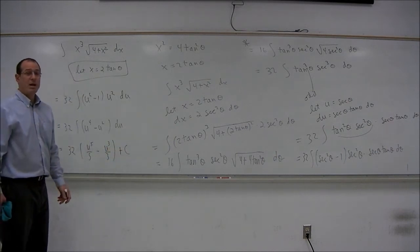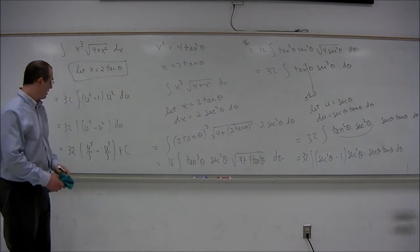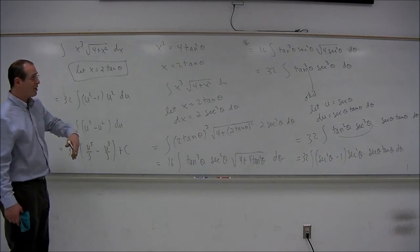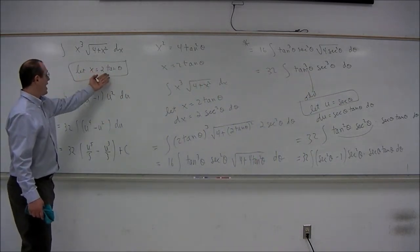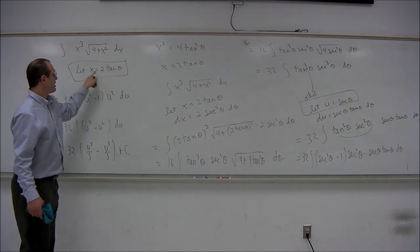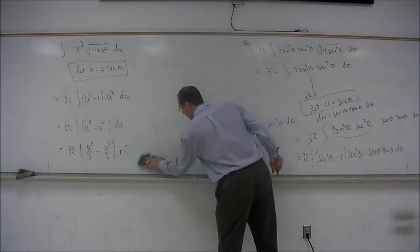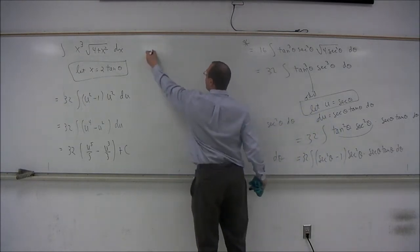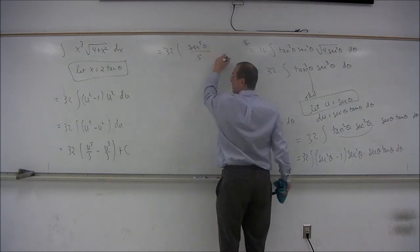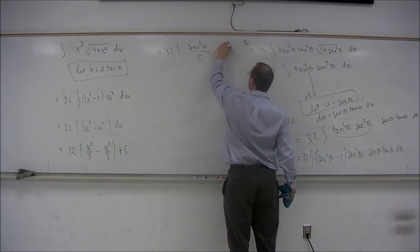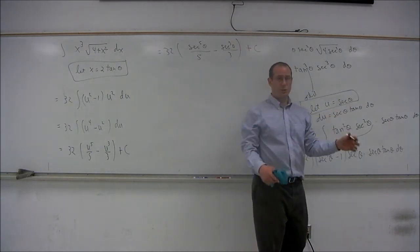So that's essentially our answer, but the problem is it's in the wrong variable. We'd like a function of x. So we need to unravel from u back to theta using the fact that u equals secant of theta, then from theta back to x. Substituting back, we get 32 times secant to the fifth theta over five minus secant to the third theta over three plus C.